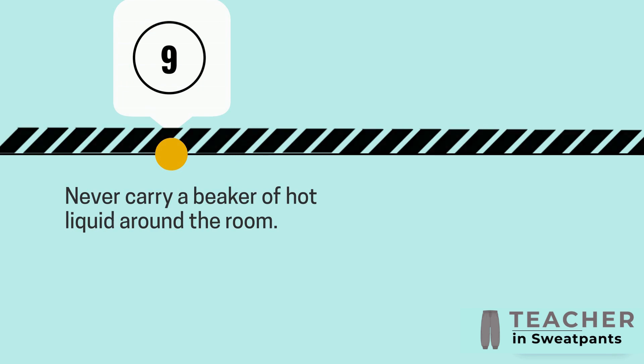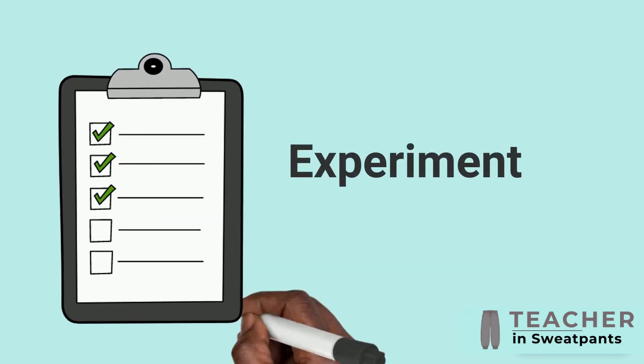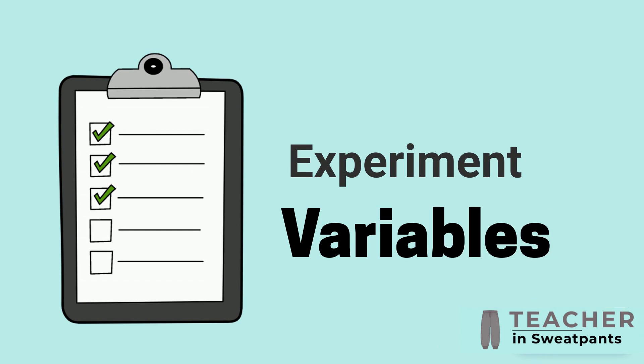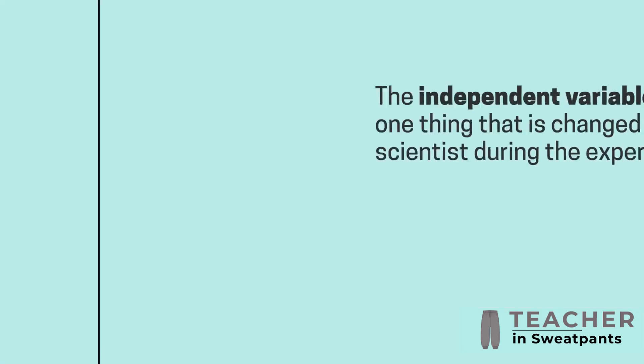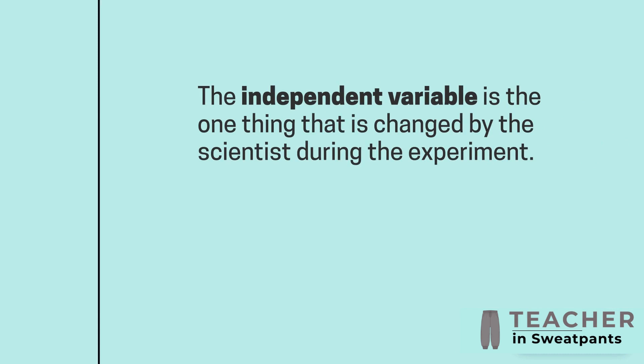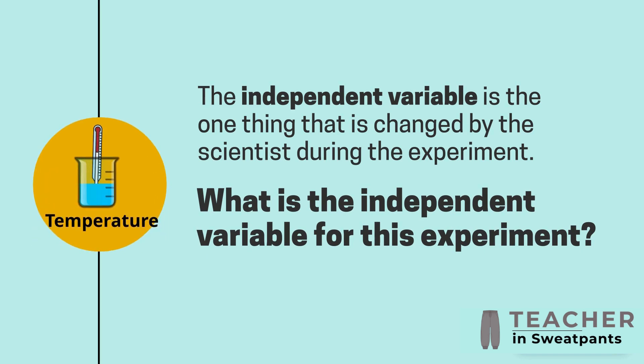Experiment variables: The independent variable is the one thing that is changed by the scientist during the experiment. What is the independent variable for this experiment? Temperature.